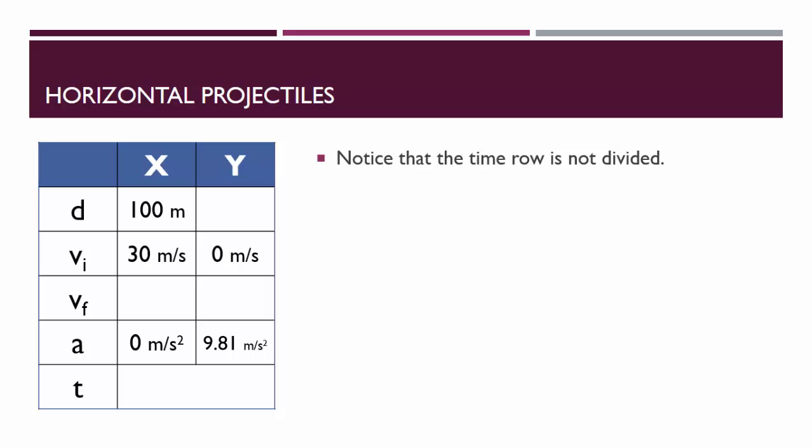You'll notice that the time row is not divided. That's because time is a scalar quantity. There's no such thing as vertical time or horizontal time. And that's actually really great for us. This means that if we have enough information in the X column, or we have enough information in the Y column to calculate the time, we can then use that value for the time in the other column.